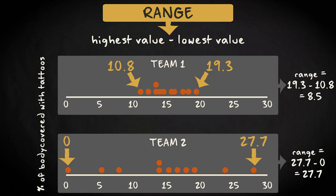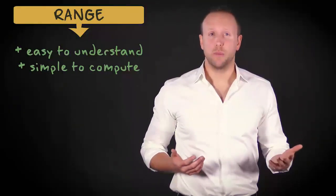The range does show you, at a glance, that there is much more variability in team 2 than in team 1. The range is a measure of variability that is easy to understand and simple to compute.